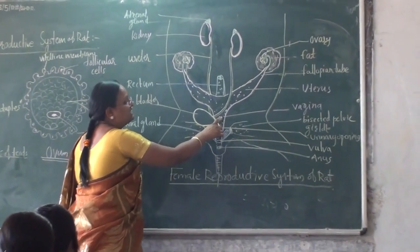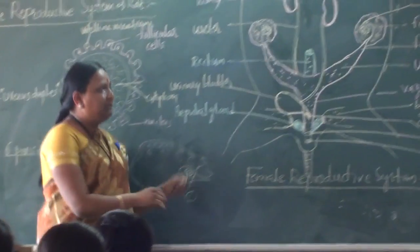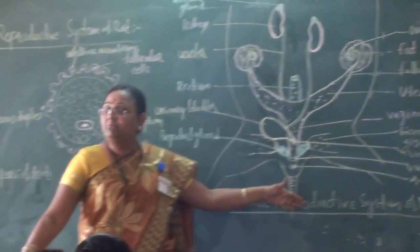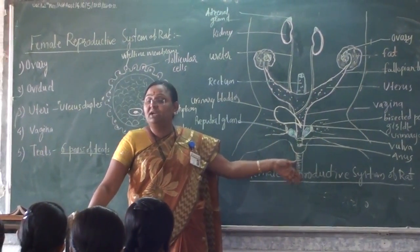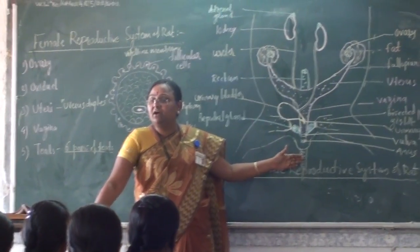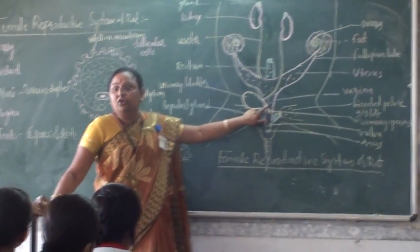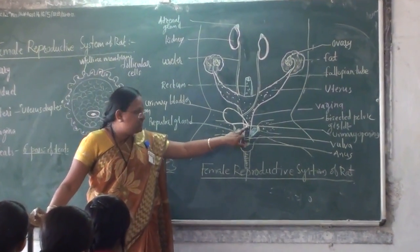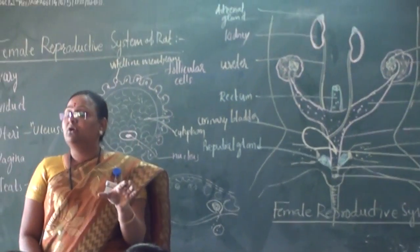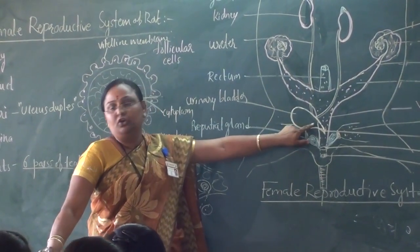That common passage is the uterus. The position of the uterus is between the rectum on one side and the urinary bladder on the other. The rectum is on the left part and the urinary bladder is the pulmonary bladder. The right position leads also to the urethra.